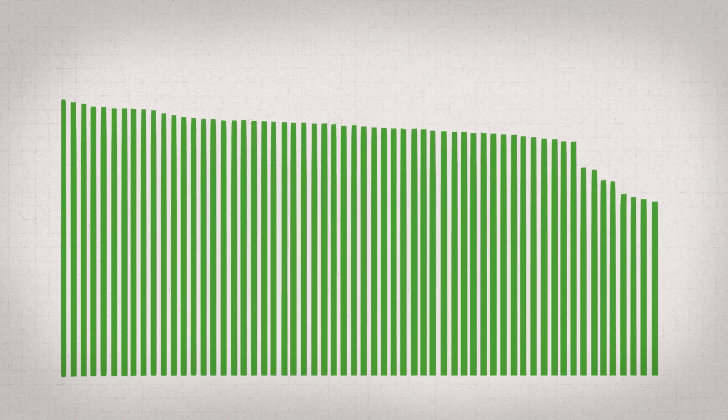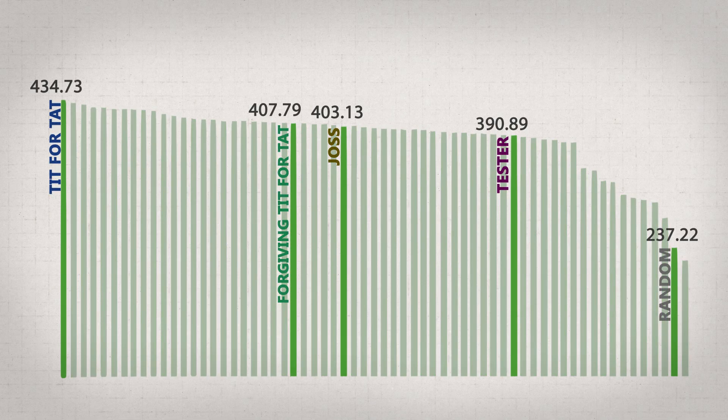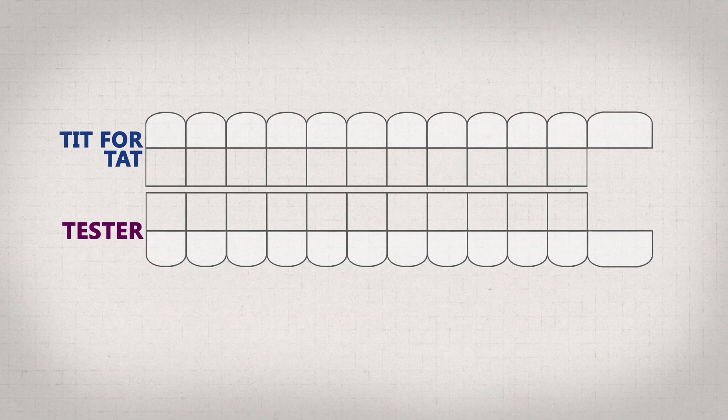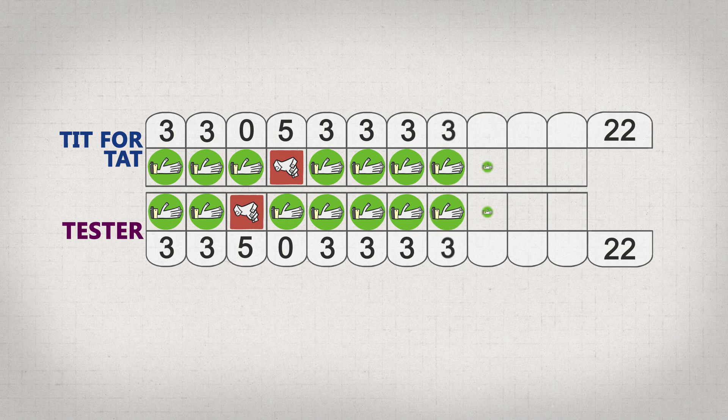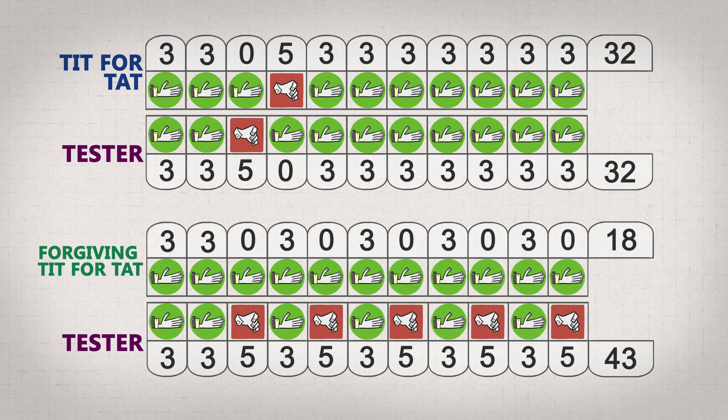Later Axelrod held another tournament. This time there were a lot more entries. And they didn't do a set 200 rounds. That way nobody would know when the interaction would end. See the footnotes below. In this tournament, even though forgiving tit for tat was entered, regular tit for tat won again. Forgiving tit for tat didn't win because people knew about it. A strategy called tester starts out cooperating, but tries defecting like this to see how the other player reacts. If the opponent punishes, it cooperates to apologize and prevent a defection echo, then just becomes tit for tat for the rest of the time. So this is what it would look like against tit for tat. But against easy going strategies like forgiving tit for tat, it can learn that it's able to take advantage of them. Forgiving tit for tat proved too forgiving. At least in this context.